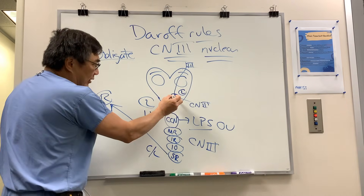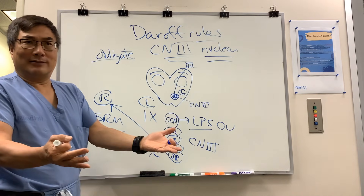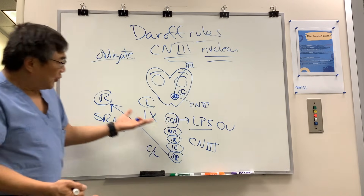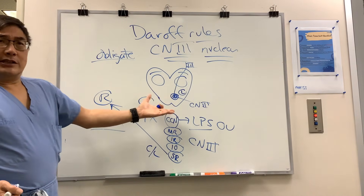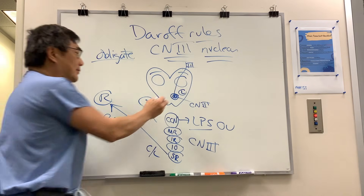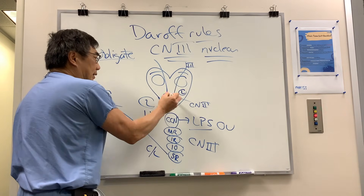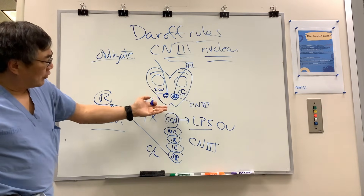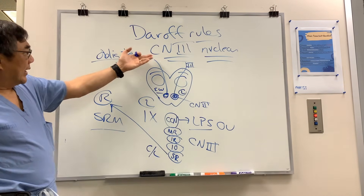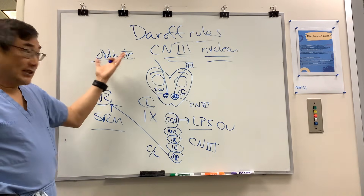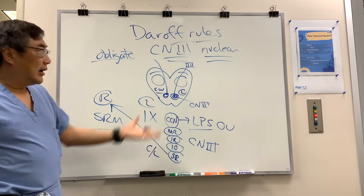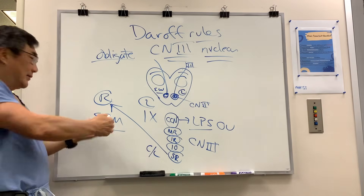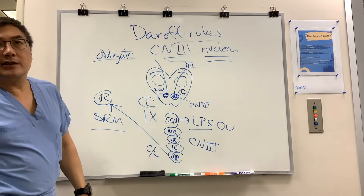In addition, the Edinger-Westphal nucleus is bilateral because its innervation is bilateral. So if you have a nuclear lesion involving the Edinger-Westphal nucleus, a nuclear third may present with this obligate combination of lid, pupil, and superior rectus involvement on the contralateral side.